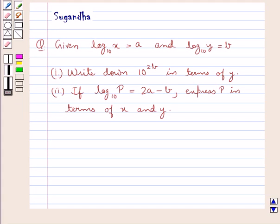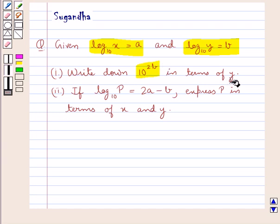Hello and welcome to the session. In this session we discuss the following question: given log x to the base 10 equal to a and log y to the base 10 equal to b, write down 10 to the power 2b in terms of y, and if log p to the base 10 is equal to 2a minus b, express p in terms of x and y.